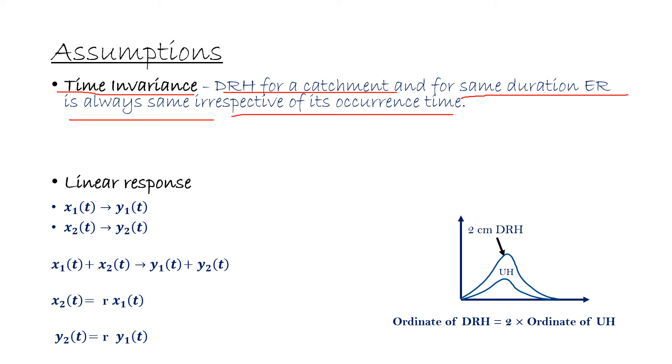Next assumption is linear response. So what does it mean? It means if x1 as an input is causing y1 as the output and x2 is causing y2 as the output, then x1 plus x2 will cause y1 plus y2 as the output. So here in the case of direct runoff hydrograph, rainfall excess is the input and resulting direct runoff hydrograph is the output, and input and output both will behave in this way.